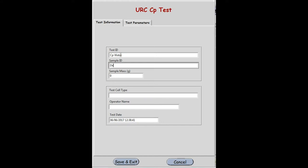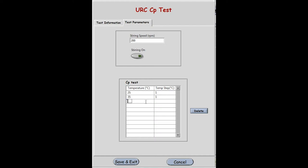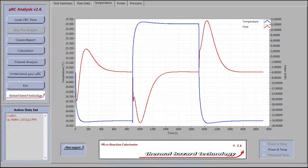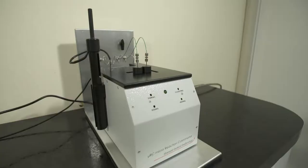The instrument quickly and accurately determines heat capacity with walk-away operation. Heat capacity at multiple temperatures can be measured in one experiment. Users simply enter experiment temperatures, sample weight and desired heat steps.